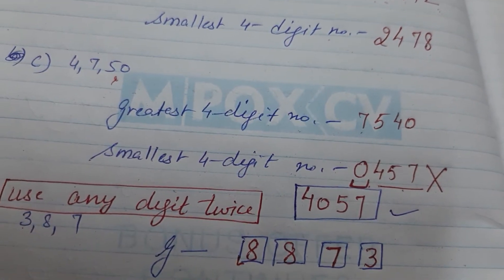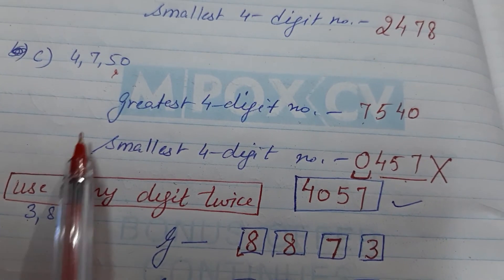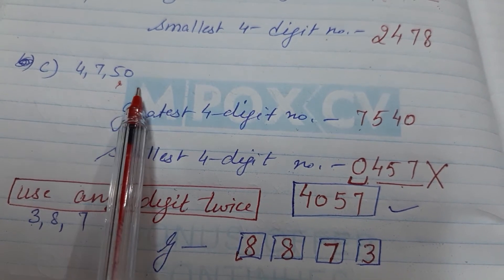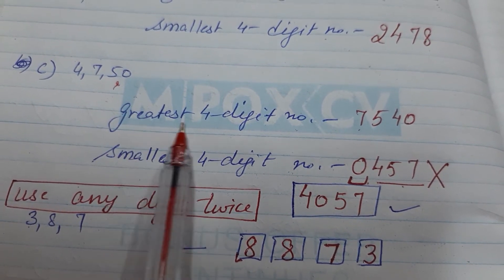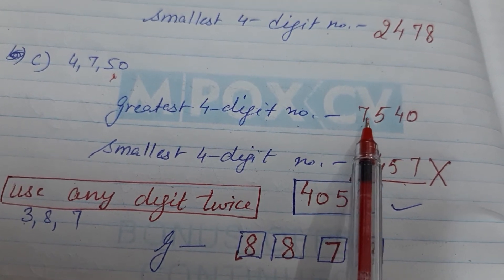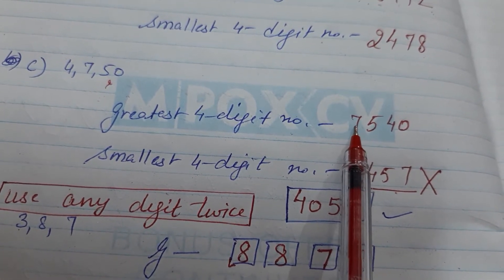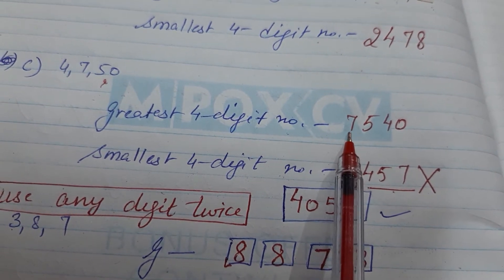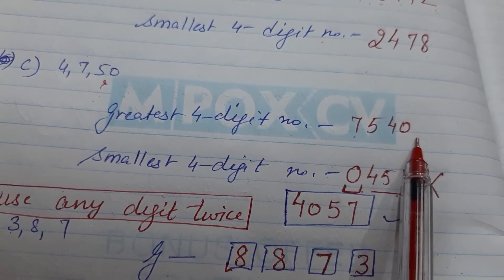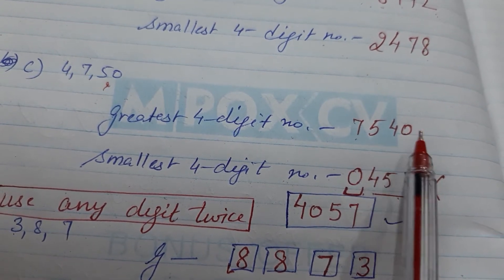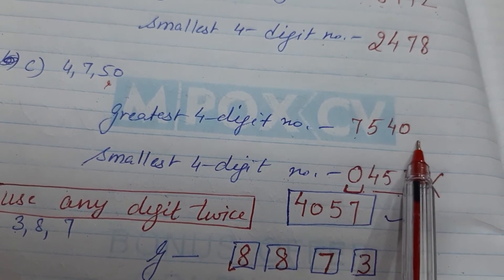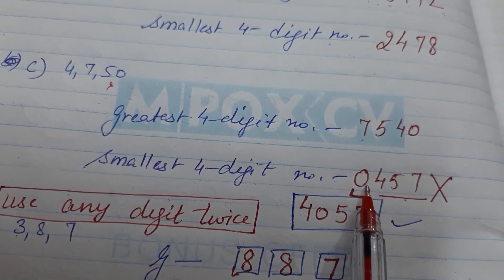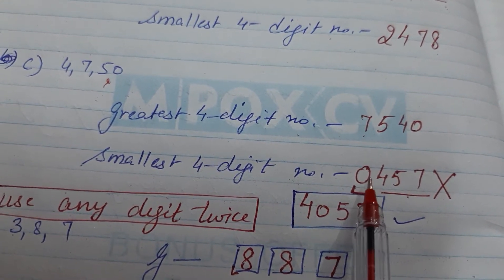Next, if I am having four digits 4, 7, 5, and 0 — 0 is also there. For the greatest four-digit number, I start writing with the greatest number, that is 7, then write the other numbers in decreasing order: 7, 5, 4, 0. So the greatest number is 7540.